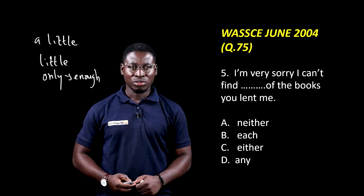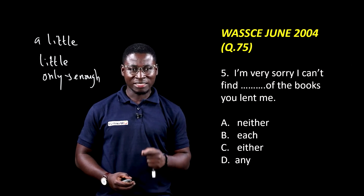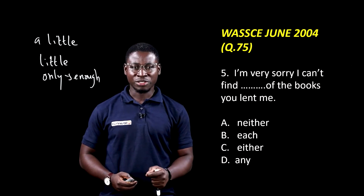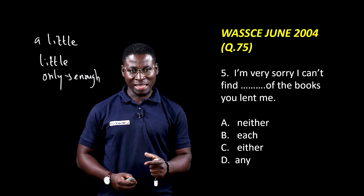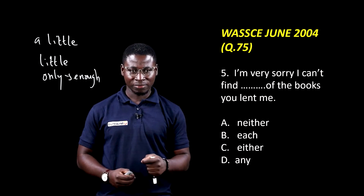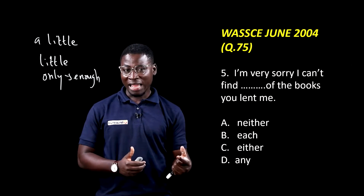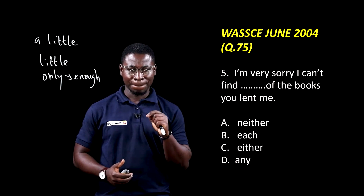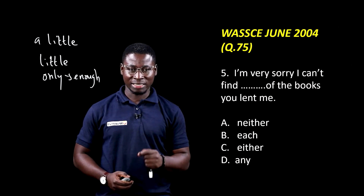WASI June 2004, Question 75. I'm very sorry I can't find dash of the books you lent me. The options are: neither, each, either, any. Neither is wrong, each is wrong, either is equally wrong. So: I'm very sorry I can't find any of the books you lent me. Your answer is Option D.